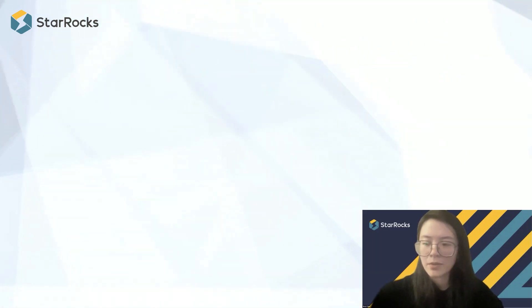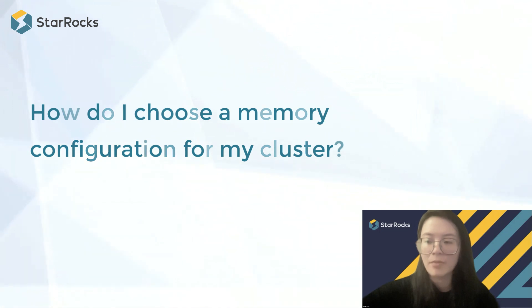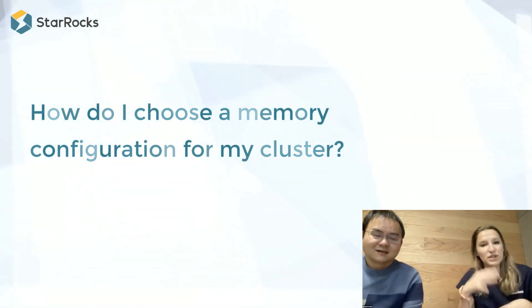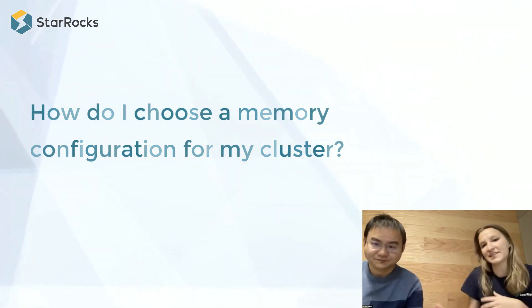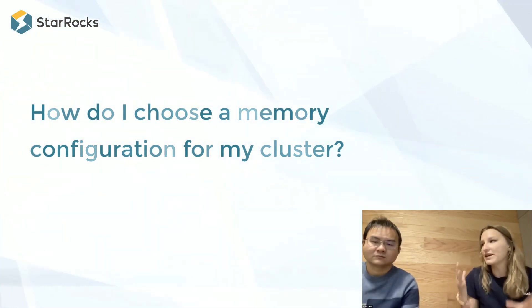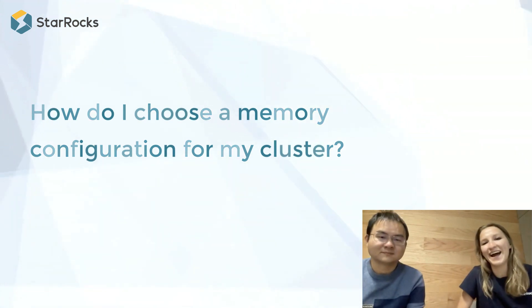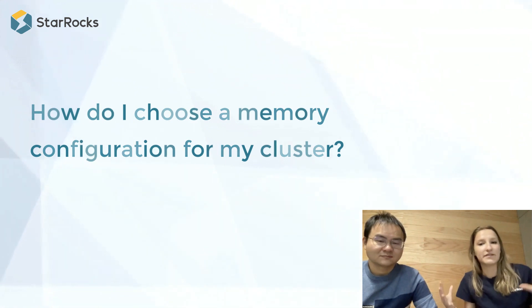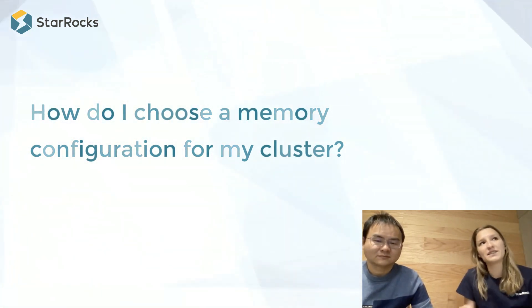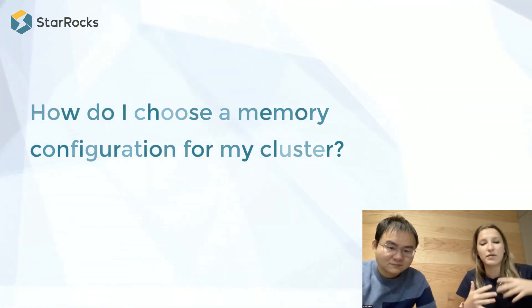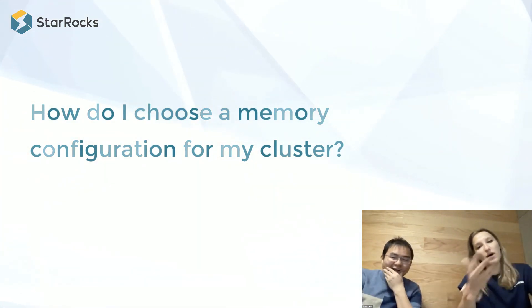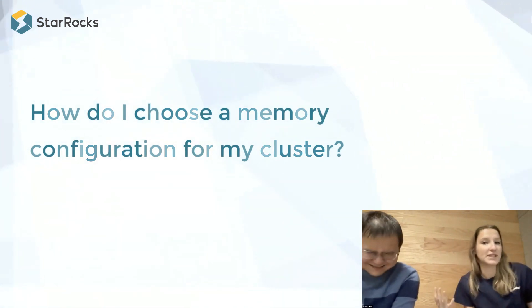The next question: how do I choose a memory configuration for my cluster? It's largely based on your use case and the types of queries you're issuing. As general guidance: scanning queries — like summing an entire column over a table — are memory intensive, while doing a lot of joining without much scanning tends to be more CPU intensive. A standard starting ratio we like to use is four CPUs per eight gigabytes of memory, then adjust based on your query profile and data.